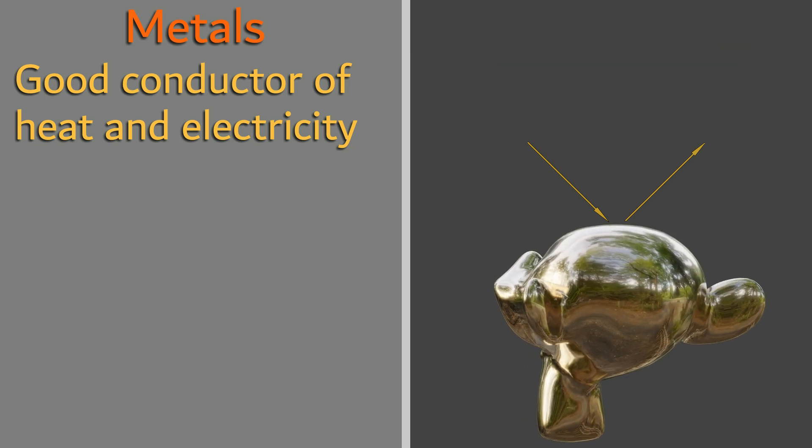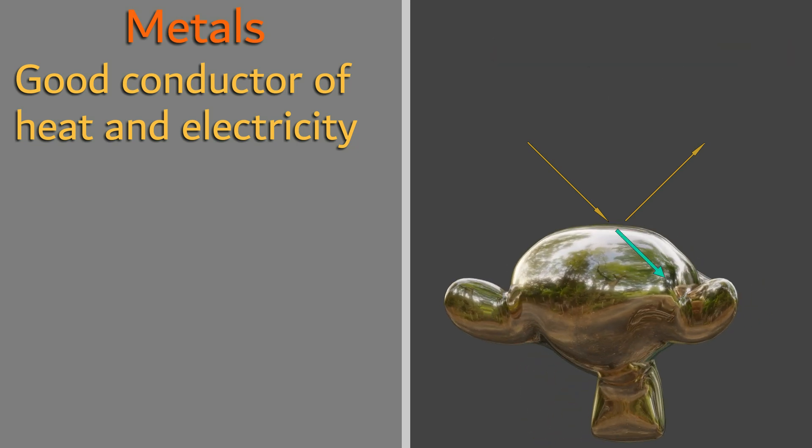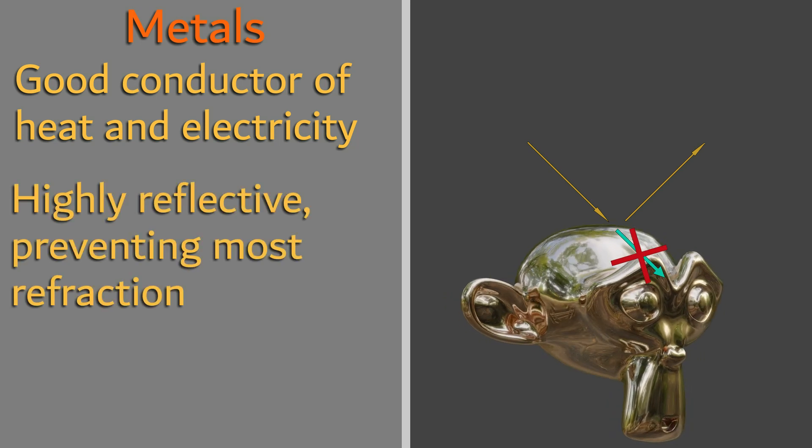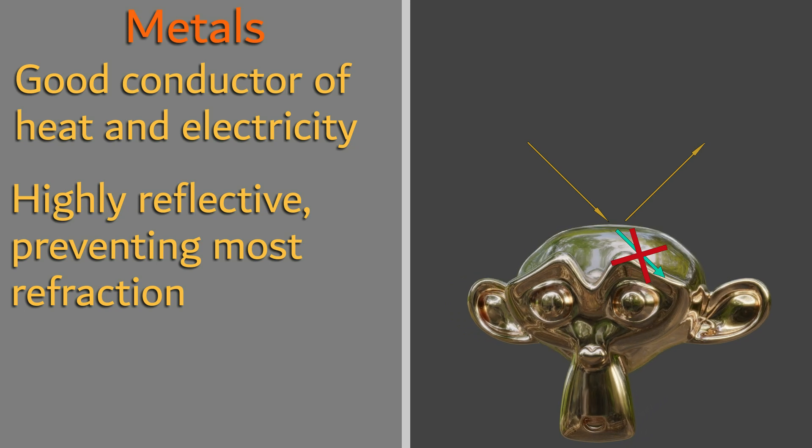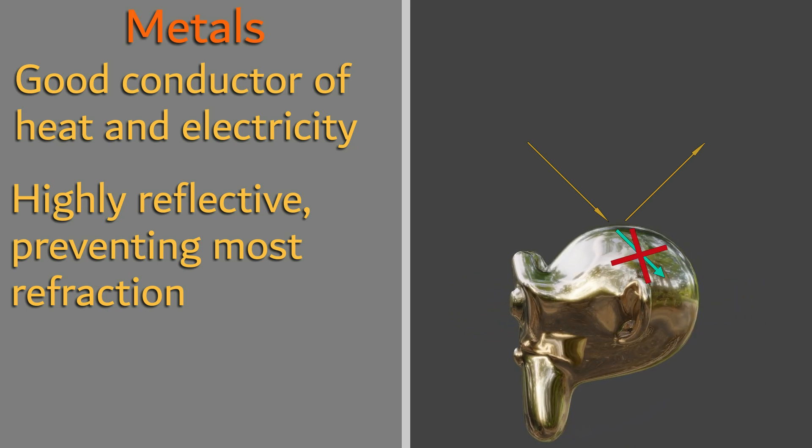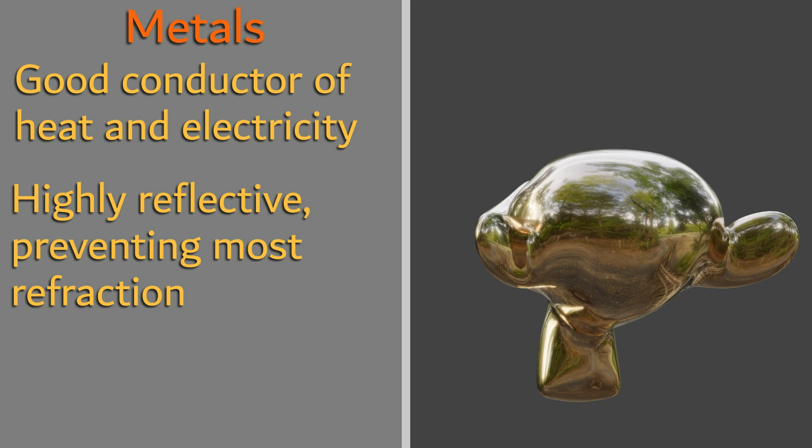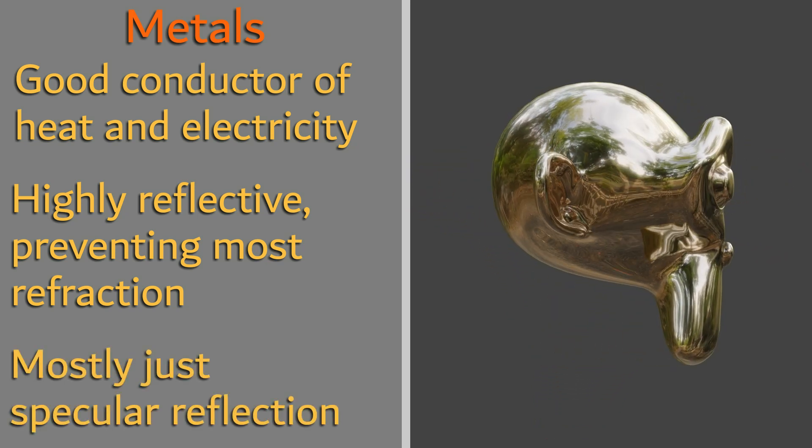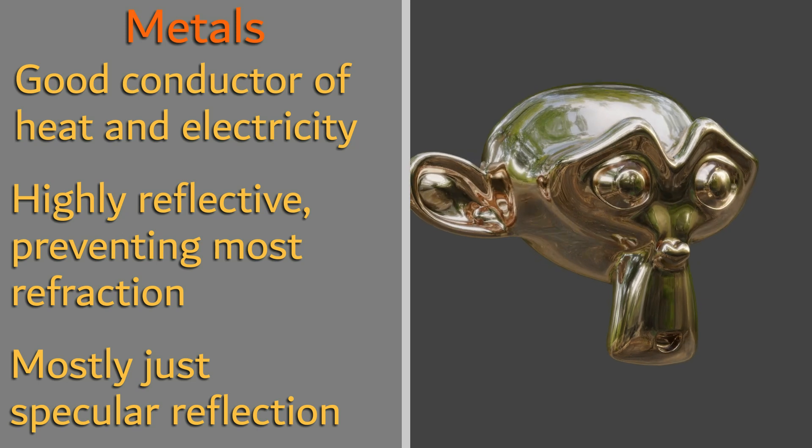Due to such high reflectivities, this prevents most light from being able to refract or penetrate the surface, eliminating most diffused reflection from actually occurring. This is what gives metals the shiny look, as it is highly reflective and mostly specular reflection.